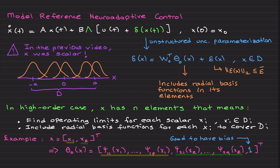If you watch the previous videos, which I will assume, then I am proceeding with the model reference neuroadaptive control for this system. In the former version of this video on this playlist, neuroadaptive control, which was a scalar case where X was scalar, we follow this unstructured uncertainty parametrization delta: basically unknown W multiplied by basis function, including radial basis function in its elements, and the residual error coming from the universal approximation theorem.